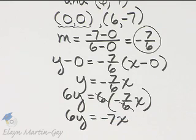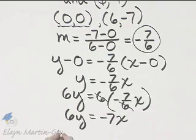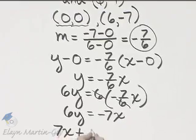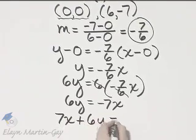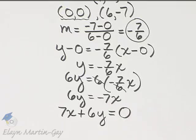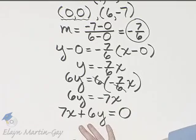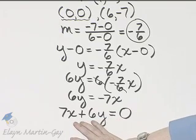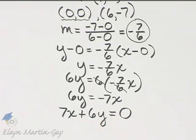I will then add 7x to both sides to write it in standard form. So if I add 7x to both sides, I'll have 7x plus 6y is equal to, what do I have left? It's equal to 0. This is in standard form. This will go through the origin. If x is 0, y is 0. And you can double check the other point too, 6, negative 7. There's our solution.